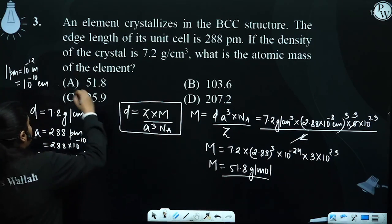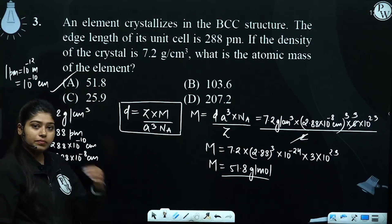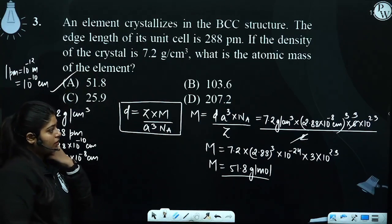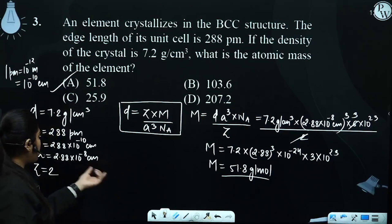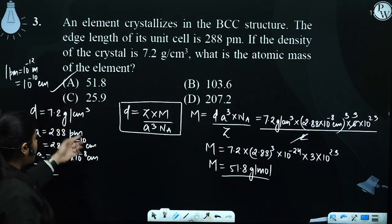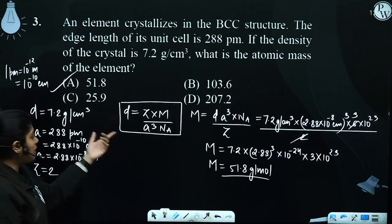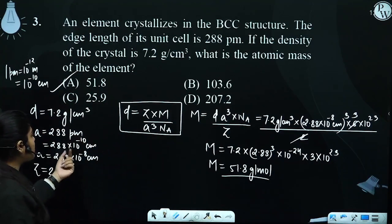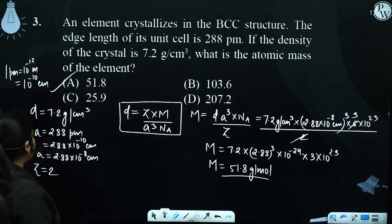The answer is 51.8 gram per mole — option number 1. We had to focus on units, because the density was in grams per centimeter cube, that's why we converted the edge length from picometers to centimeters.